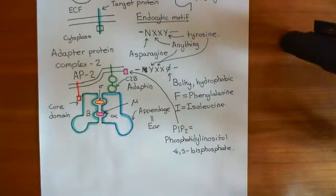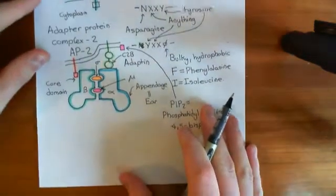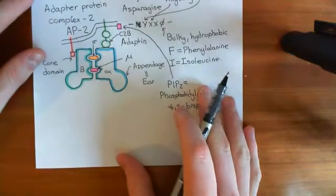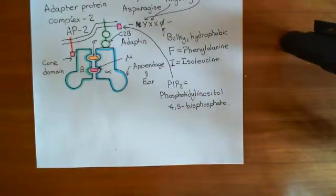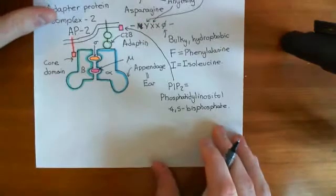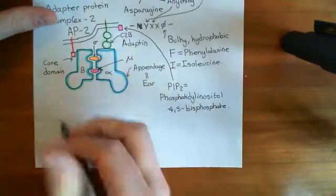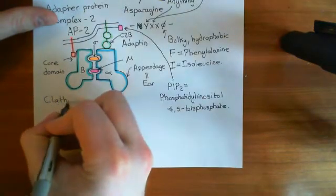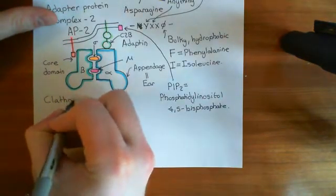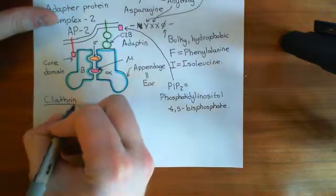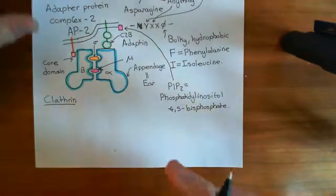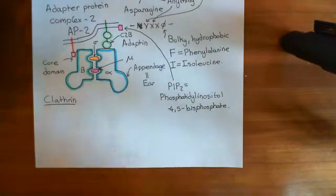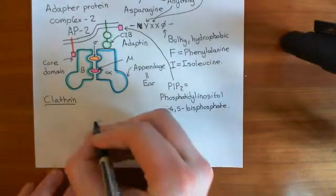So now what we want to look at is the next step. And to understand the next step, we need to introduce the key player after which the entire process is named. We need to introduce clathrin. So clathrin proteins - clathrin has two chains. It has a heavy chain and a light chain.